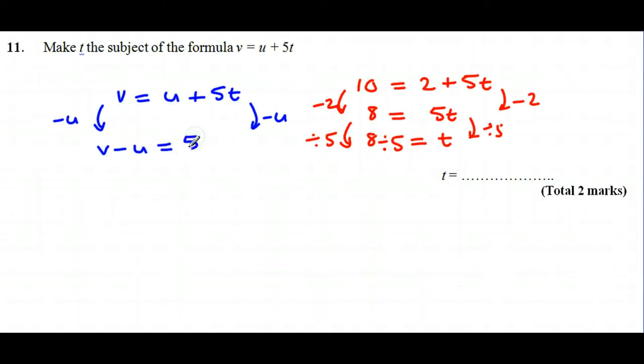Same process - T has been multiplied by 5, so I'm going to need to divide by 5.